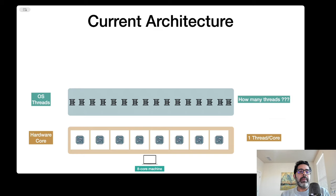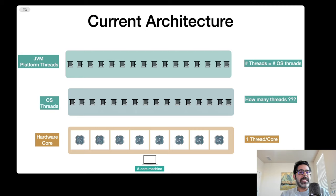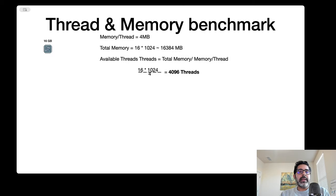The operating system will give you many more threads depending on your memory and a few other things. Each of those threads executes a process on one of these cores. When it comes to the JVM, it provides another layer on top called platform threads. One platform thread equals one operating system thread, and we'll learn how to calculate the maximum number shortly.